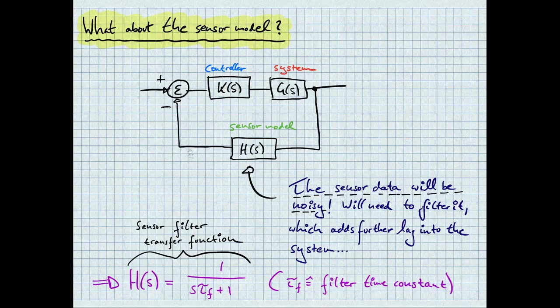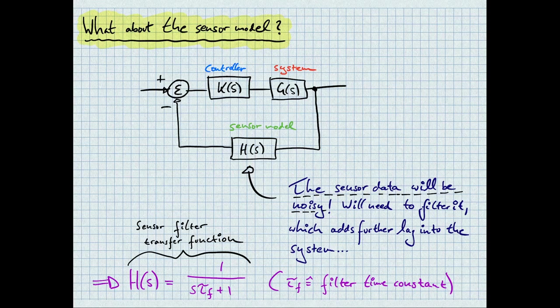But what about the sensor model, you might ask? In the real world, we'll be facing many non-idealities, for instance, noisy sensors. We'll have to filter these noisy measurements, but this in turn will introduce additional lag or delay into the system. We will have to take this into account, as too much delay may make the system unstable. As with the motor model, this lag is modelled by a first order low-pass filter, or first order lag, with time constant, tau f.